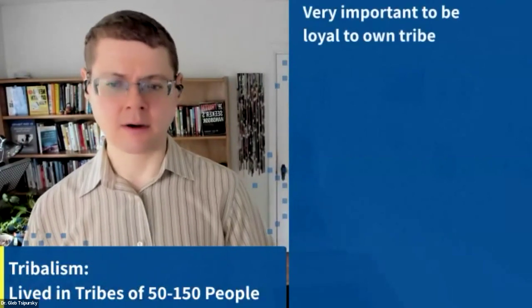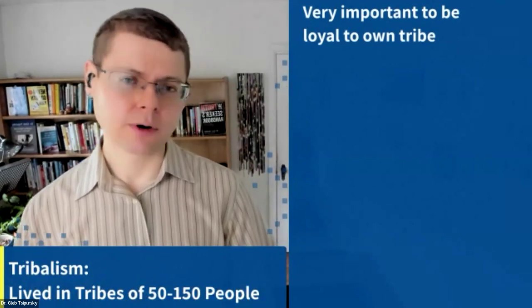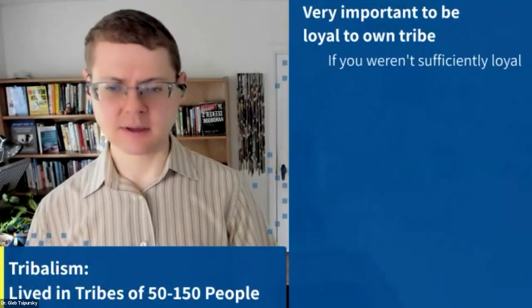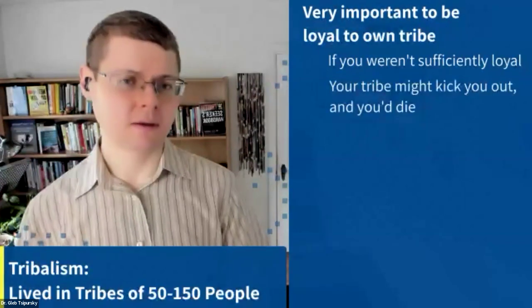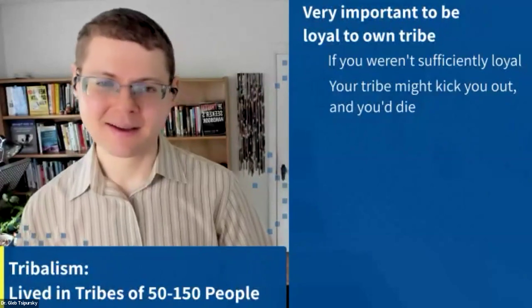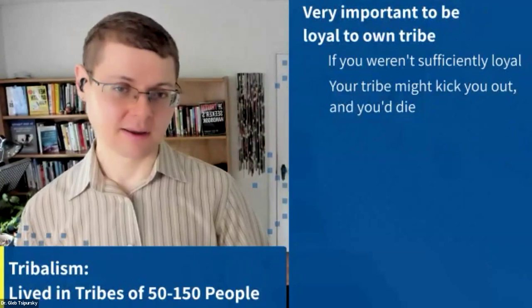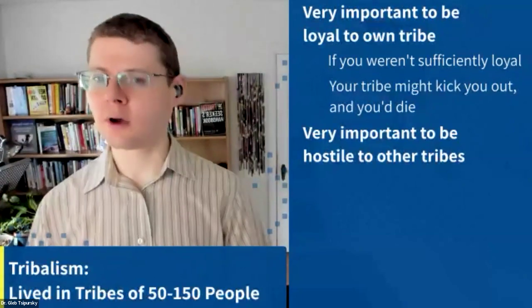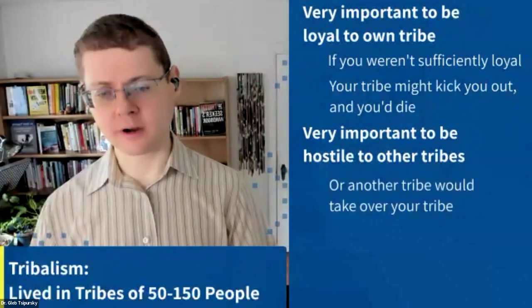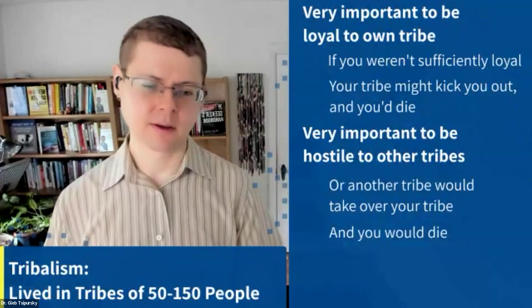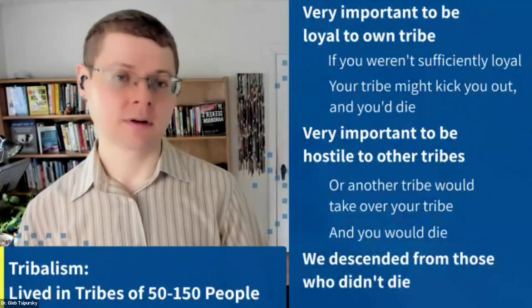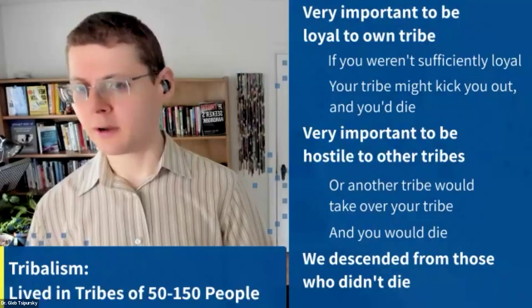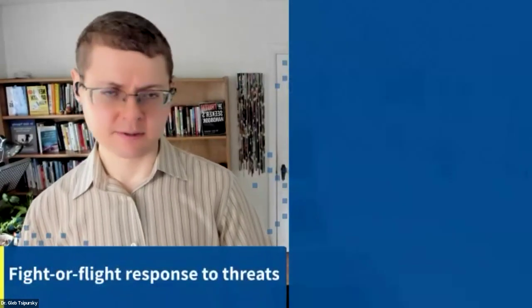But we feel that our intuitions are accurate. In the ancient savannah, for example, it was very important to be loyal to your own tribe — your tribe was what saved you. If you weren't sufficiently loyal, your tribe might kick you out, and you'd be ostracized and die. We are the descendants of those who weren't ostracized. It was also very important to be hostile to other tribes — if you weren't sufficiently hostile, another tribe would take over and you would die. We descended from those who didn't die, so we are wired to be loyal to those in our tribe and hostile to those who are not.